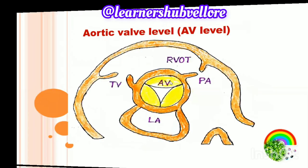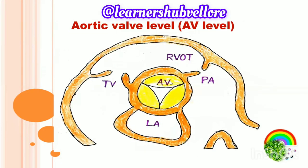Coming to the aortic valve level, the structures we can see are the tricuspid valve, left atrium, aortic valve and its cusps, right ventricular outflow tract, and pulmonary artery.